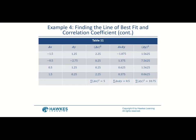Checking the table: the sum of delta x squared is 5, the sum of delta x times delta y is 0.5, and the sum of delta y squared is 10.75. We'll use these values to find the slope, y-intercept, equation of the line, and the correlation coefficient.